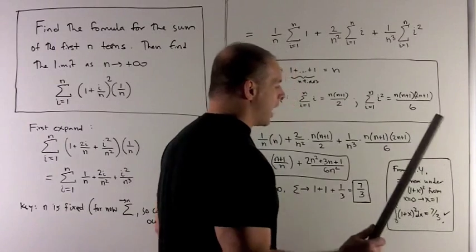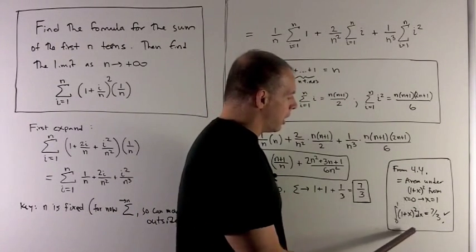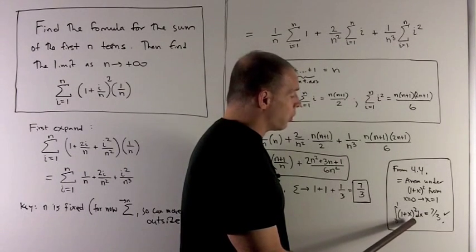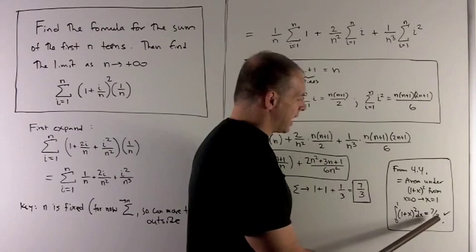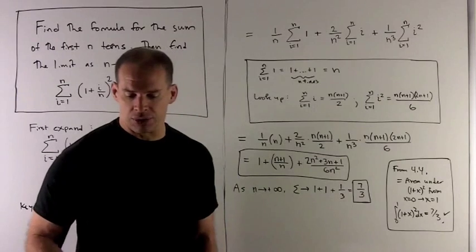In 4-4, we'll actually see how to compute this area. So we'll have this little thing we call a definite integral, and then the definite integral, when we have the rule for that, it's going to tell us that this has to be equal to 7/3, which agrees with our limit using rectangles.